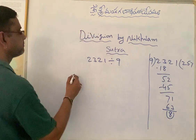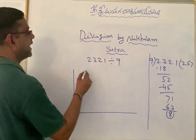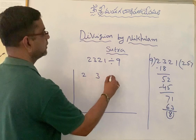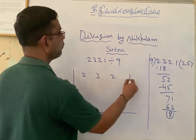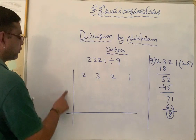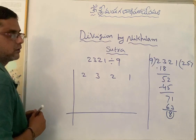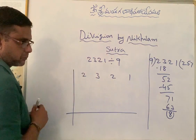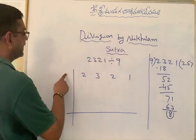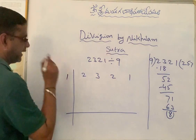Now let us divide by Vedic method. Write the dividend separately like this: 2, 3, 2, 1. And here in the divisor portion, actually we have to write 9, but we are applying Vedic method Nikhilam. So we need to write Nikhilam of 9, that is 1.